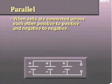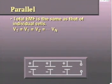More precisely stated, the rules are: first, total EMF is the same as that of the individual cells. In equation form, this is V sub T equals V sub 1 equals V sub 2 equals V sub N.